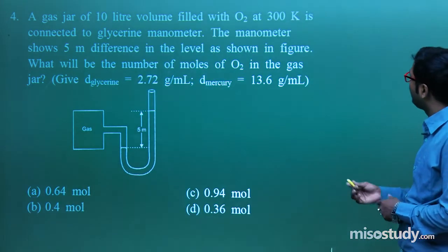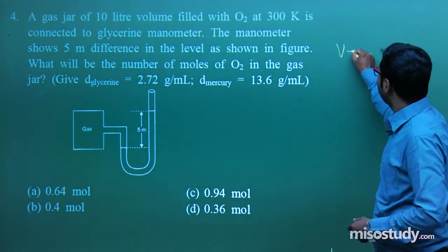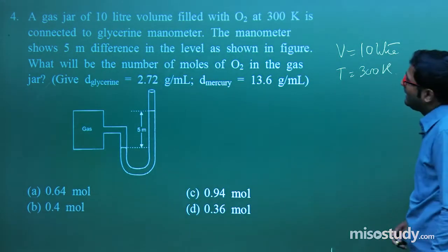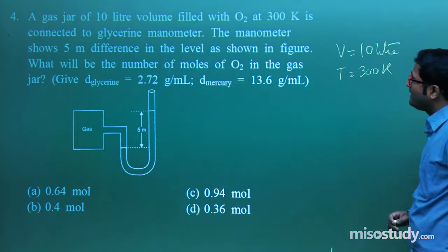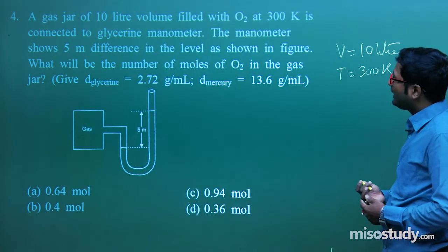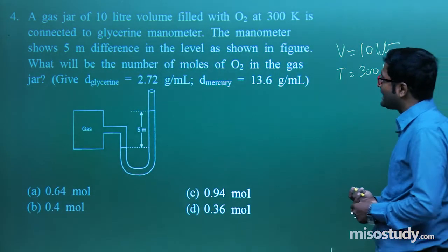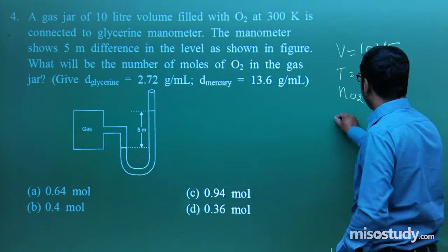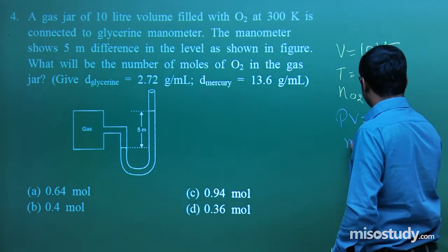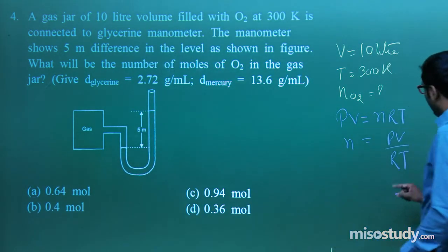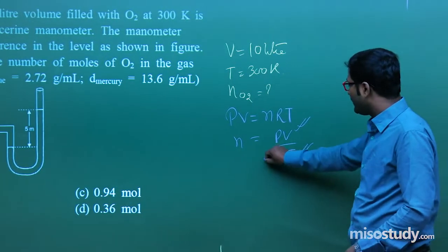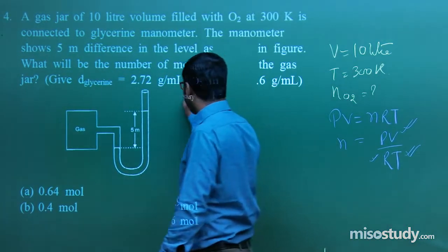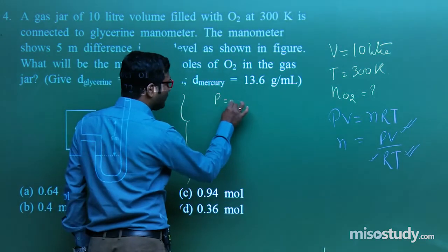A gas jar of 10 litre volume at temperature 300 K is connected to a glycerine manometer. The manometer shows 5 meter difference in level. What will be the number of moles of O2 in the gas? We need n = PV/RT. We know V, T, and R, but not P. To find P, we use P = ρgh.